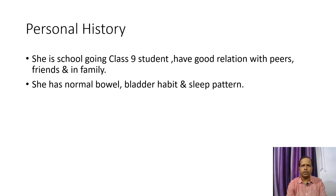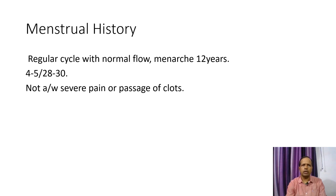Personal history: She is school-going, a Class 9 student with good relations with peers, friends, and family. She has normal bowel and bladder habits and a normal sleep pattern. Menstrual history: She has a regular cycle with normal blood flow. Age of menarche was 12 years; her periods last for 4 to 5 days and come at a 28 to 30 day interval. No associated severe pain or passage of blood clots during menstruation.